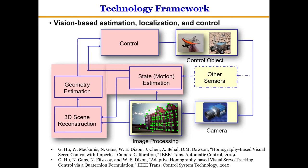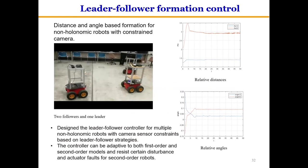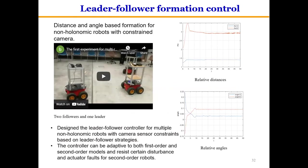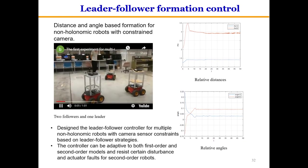For vision-based smart robot systems, there are several extra challenges, including cooperative processing of a large amount of vision information, cooperative localization and estimation, optimization of the robot network's abilities in localization and sensing, and their limited resources including power, communication, and computing capacities. Several types of experiments for multi-robot formation using vision will be shown, though these experiments are still at an early stage with a lot of R&D to be done.